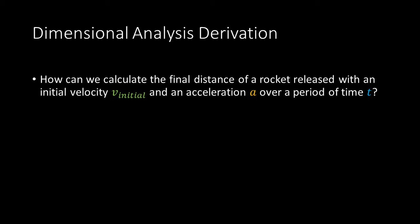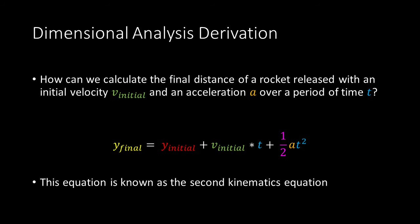So how can we calculate the final distance of a rocket released with an initial velocity v-initial and accelerating with a magnitude a over a period time t? So we could state that the final distance is equal to the initial distance plus the initial velocity times time plus one-half times the acceleration of the object times the time squared. This equation is known as the second kinematics equation.